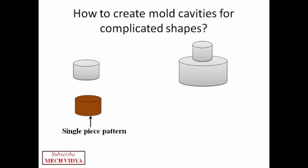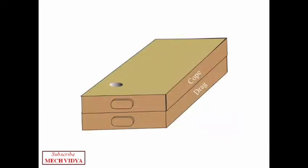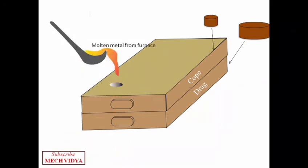Okay, so a far better option is to go for split piece pattern. Here the pattern is split into two parts and we use two flasks. The upper part is called cope and the lower part is called drag. So one half of the pattern goes in the cope and the other part goes inside the drag. And finally, the molten metal is poured in a hole cut in the sand, also known as the pouring cup, and it flows into the cavity through a gating system. Now what is the gating system? I will explain this thing in subsequent lectures.